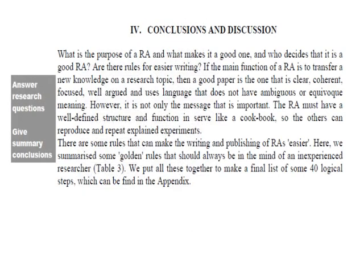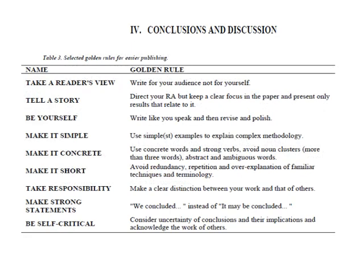Number four is conclusions and discussions: answer your research questions and give a summary of conclusions. Table 3 lists nine selected golden rules for easier publishing. These include: take a reader's view, write for your audience not for yourself, tell a story, direct your work but keep a clear focus in the paper, and present only results that relate to it.